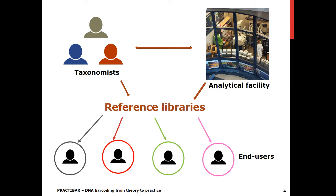In these days when the number of taxonomists is in constant decline, this task might not be that straightforward. Then you need an analytical facility to process those specimens, to extract the DNA, amplify and sequence the barcodes. And then you need a database to store all the data and make it available to end users.